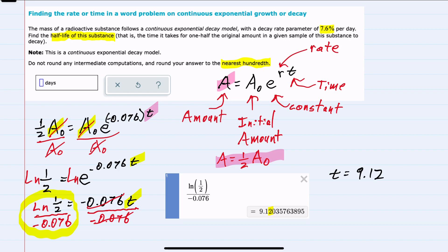And since our rate was per day, our time is in days. So in 9.12 days, we will have half of what we had started with.